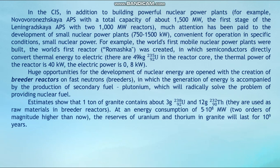Huge opportunities for the development of nuclear energy are opened with the creation of fast neutron breeder reactors, in which the generation of energy is accompanied by the production of secondary fuel — plutonium — which will radically solve the problem of providing nuclear fuel. Estimates show that one ton of granite contains about 3 g of U-238 and 12 g of Th-232, used as raw materials in breeder reactors. At an energy consumption 5×10⁸ MW — orders of magnitude higher than now — the reserves of uranium and thorium in granite will last for 1 billion years.